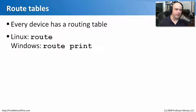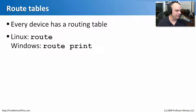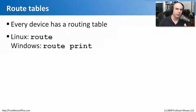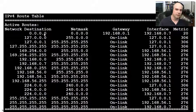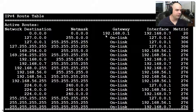Routing issues can be a little hairy, but fortunately they're very easy to troubleshoot because every device has a routing table — every computer, every printer, every router, everything that works at layer three. If you're in a Linux or Unix environment, just type 'route' at the command line to see the routes. If you're running Windows, type 'route print' and it will print out a list of all routes. Here's an example of the route table from one of my computers — 0.0.0.0 is my default route.